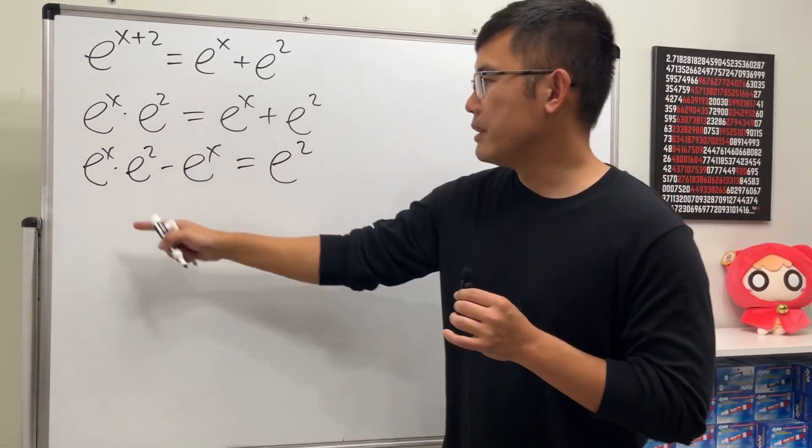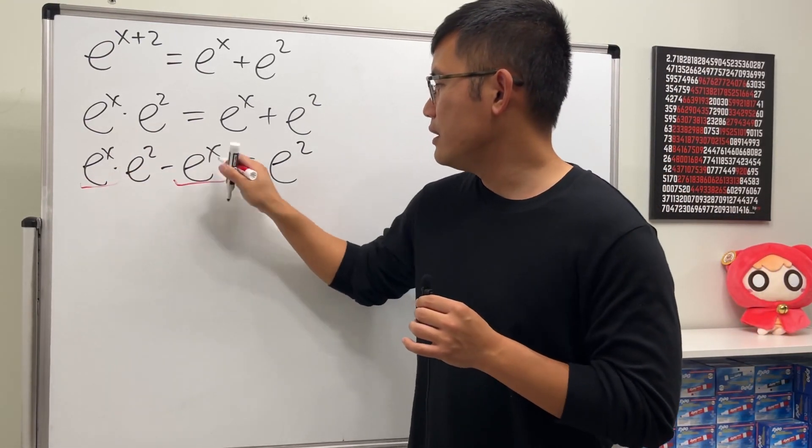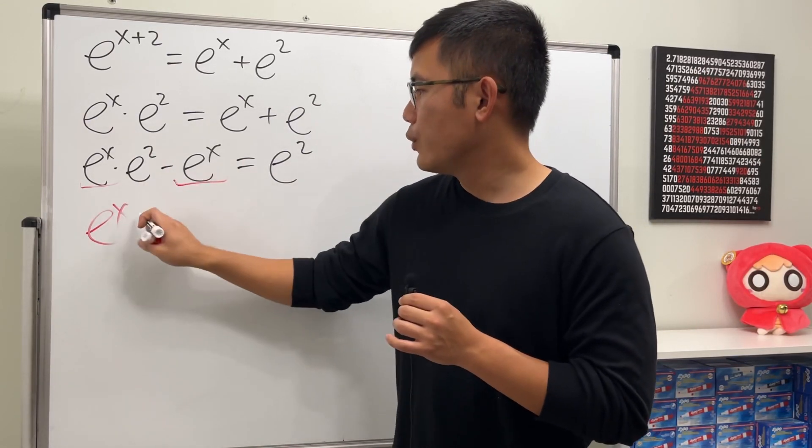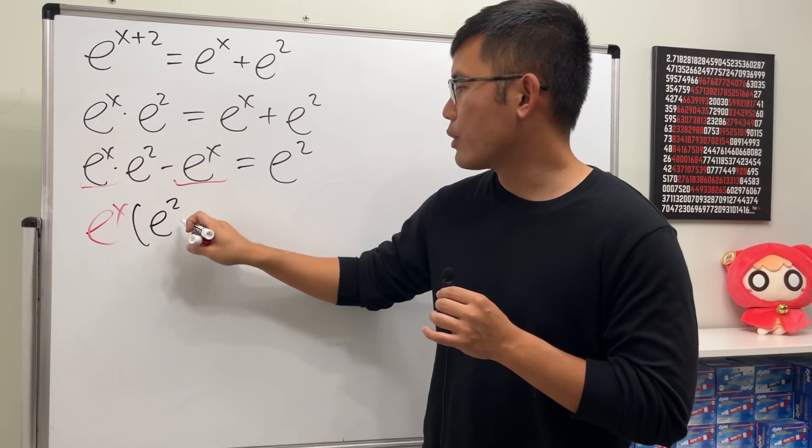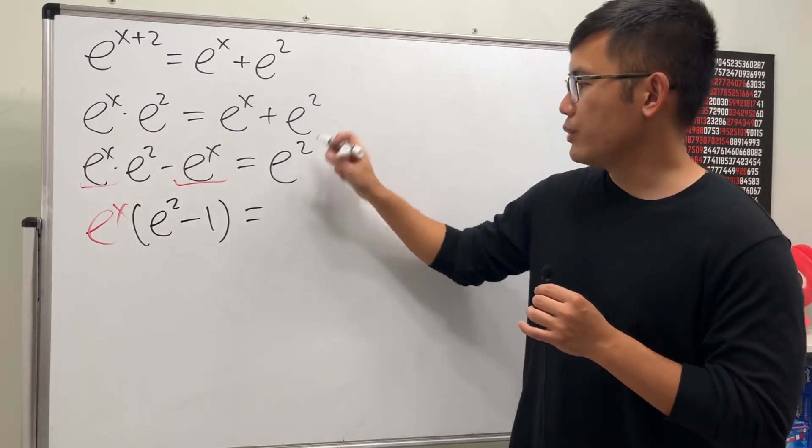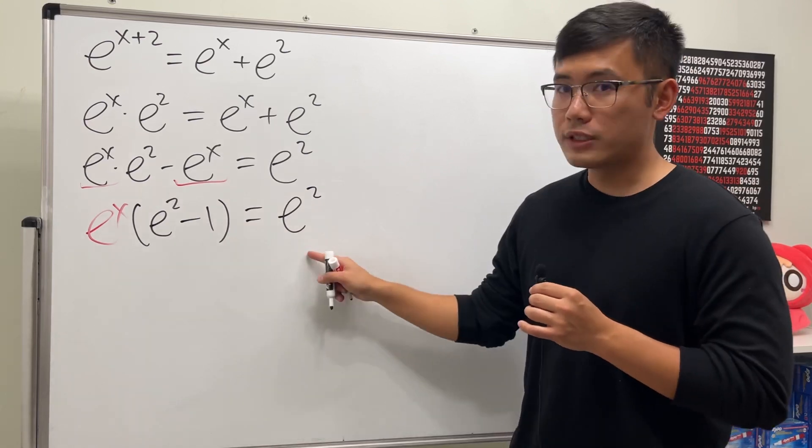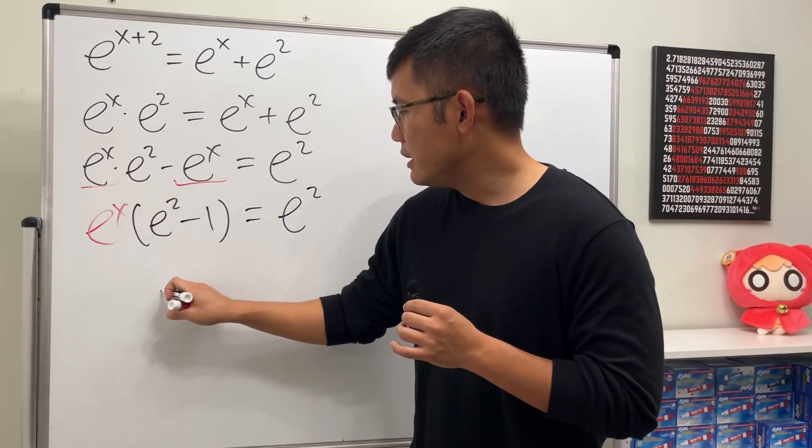And because both of these have e to the x power, we can factor that out, and then we will have e to the x times (e to the second power minus one), and this is equal to e to the second power. Then of course we can just divide on both sides, so we see that e to the x power is equal to e to the second power over (e to the second power minus one).